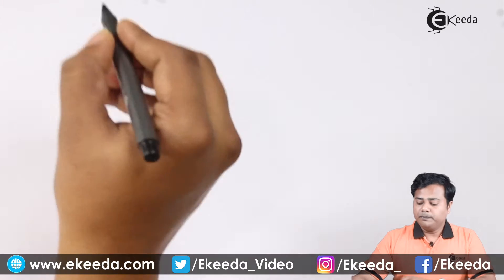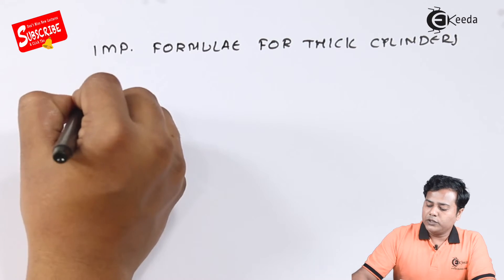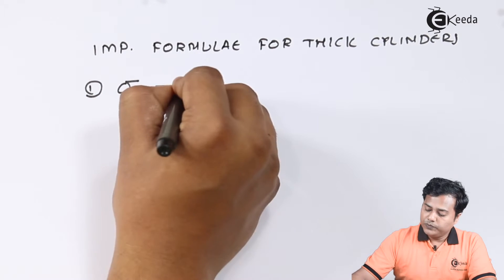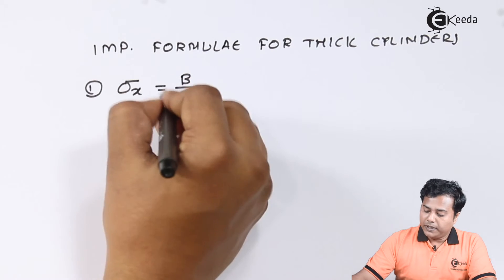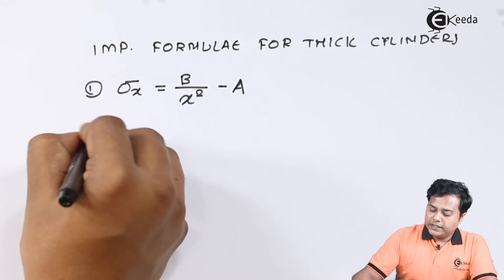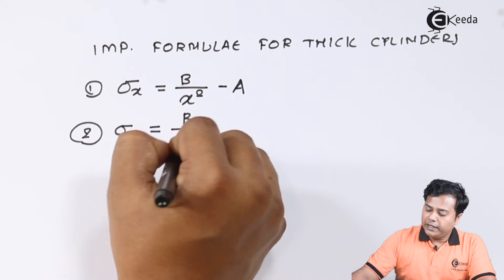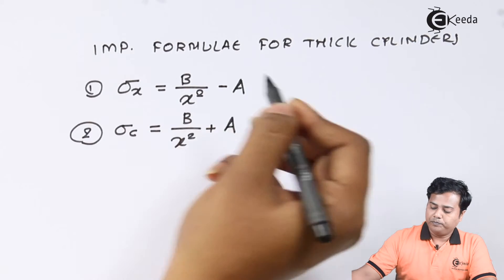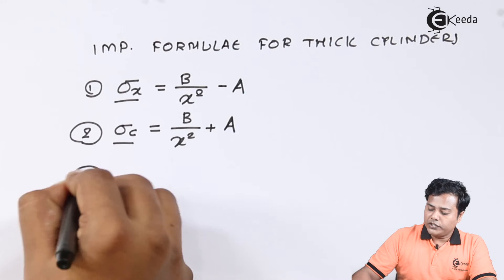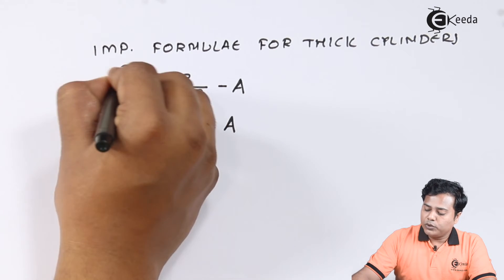There are basically three important formulae for thick cylinders. The first one is: radial stress is equal to factor B divided by x square, where x is the radius, minus A which is another factor. The second equation is: circumferential stress is equal to factor B divided by x square plus A. The factors remain the same, the only change being the type of stress. Instead of sigma x you can write sigma radial also — both ways it is correct.